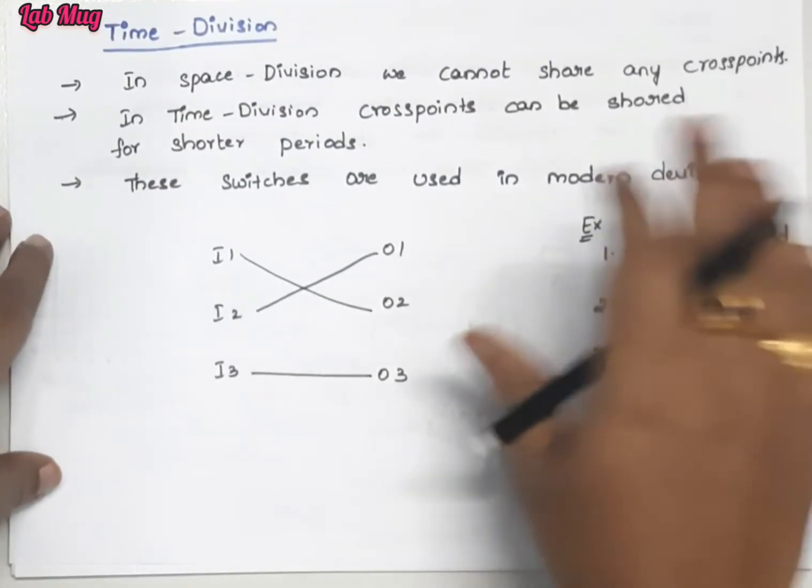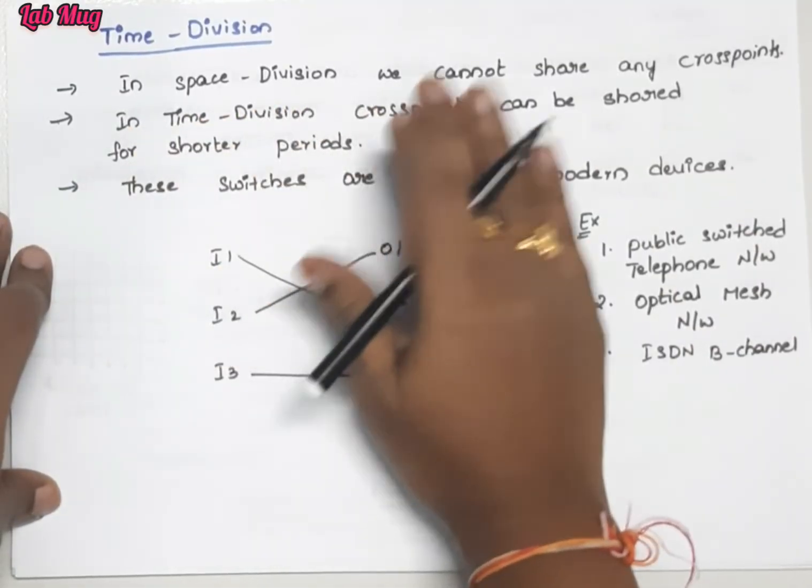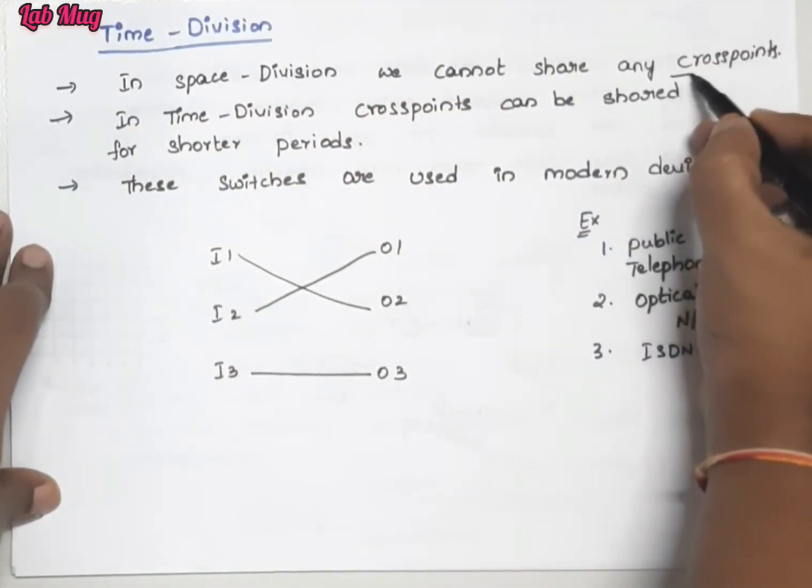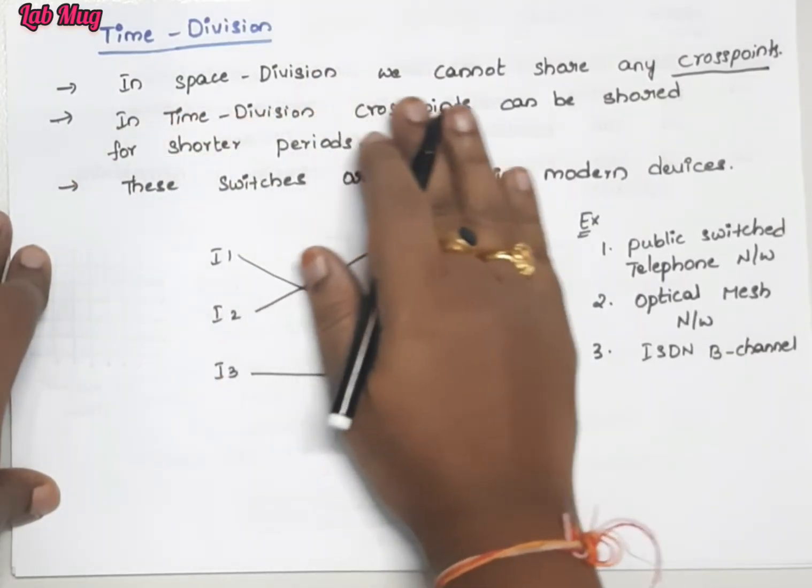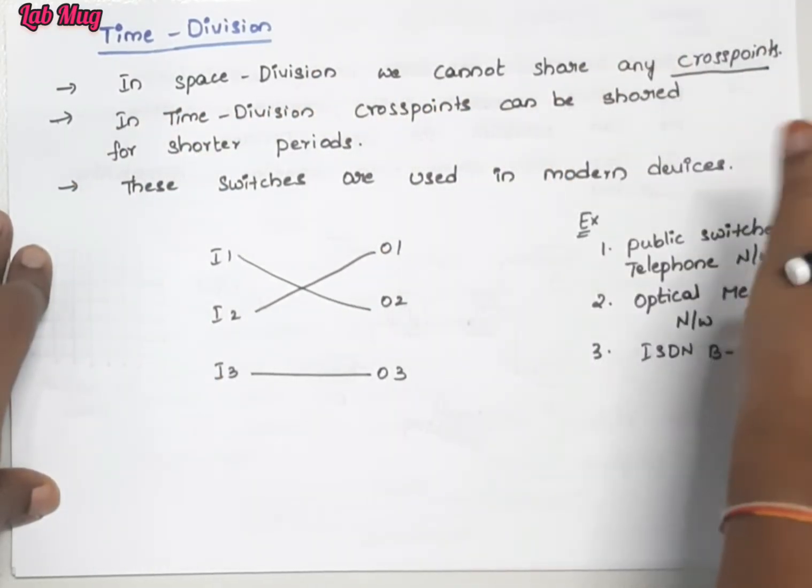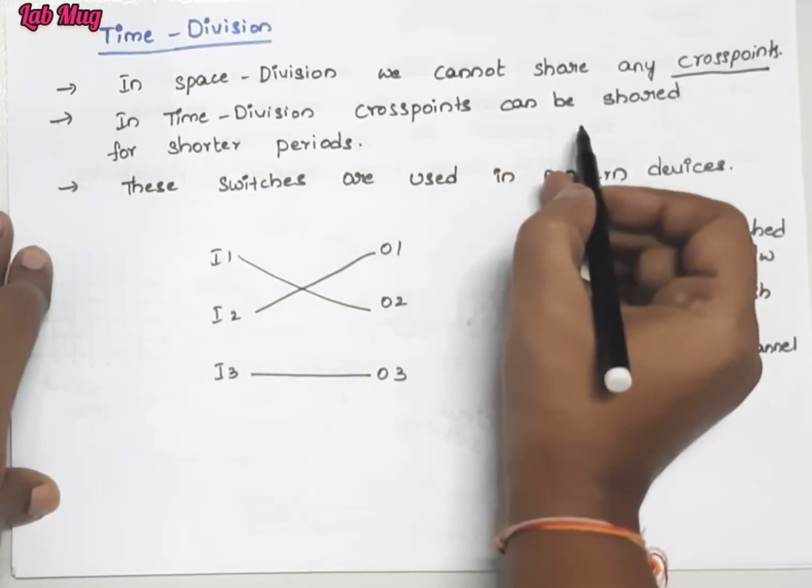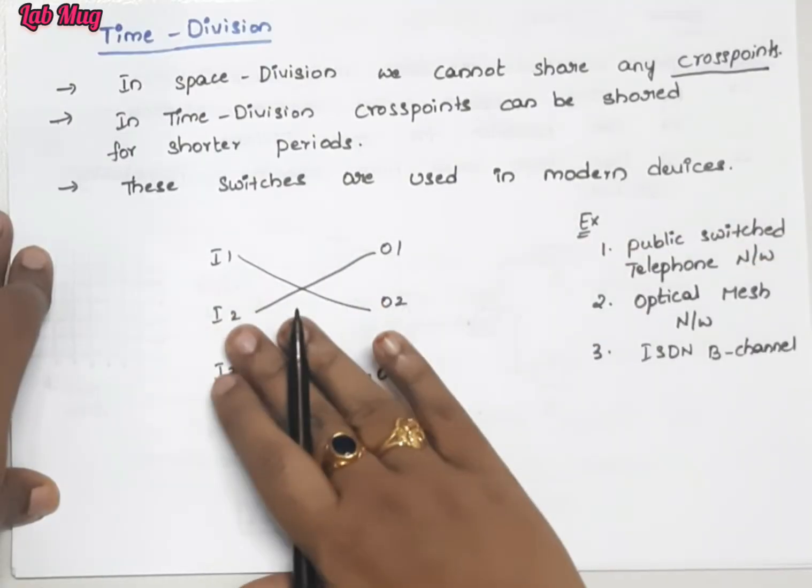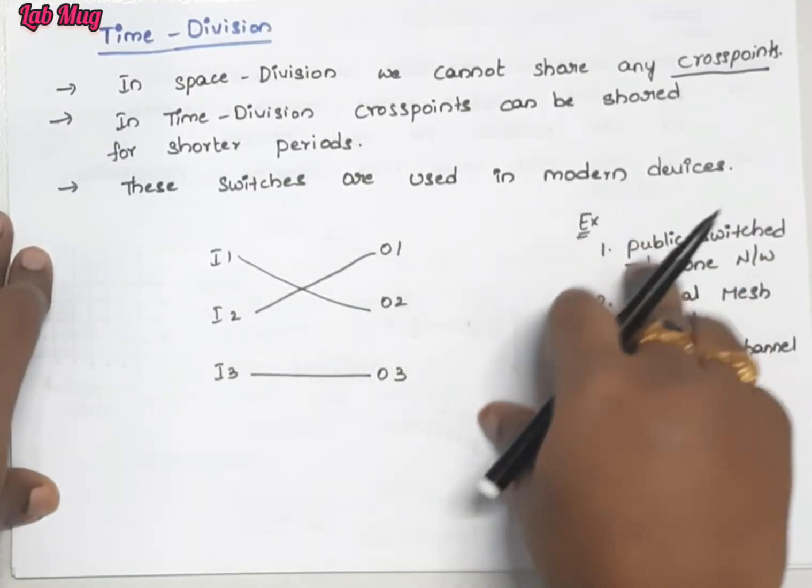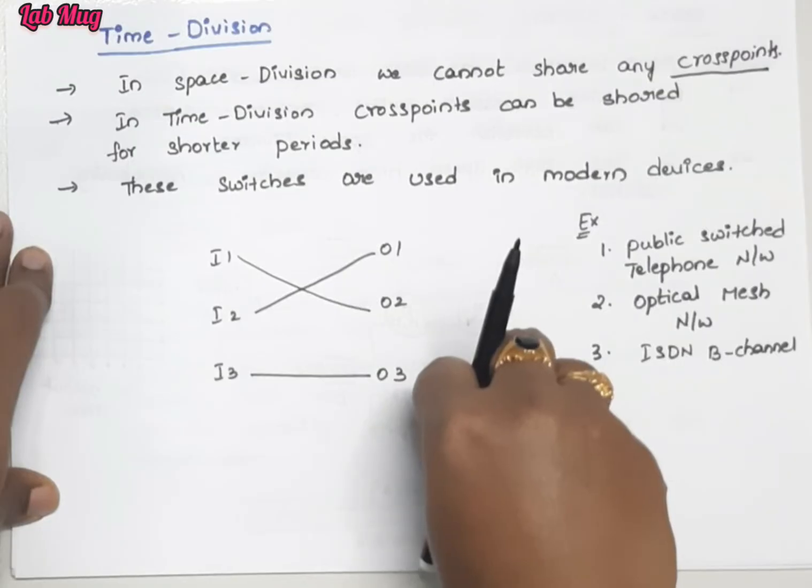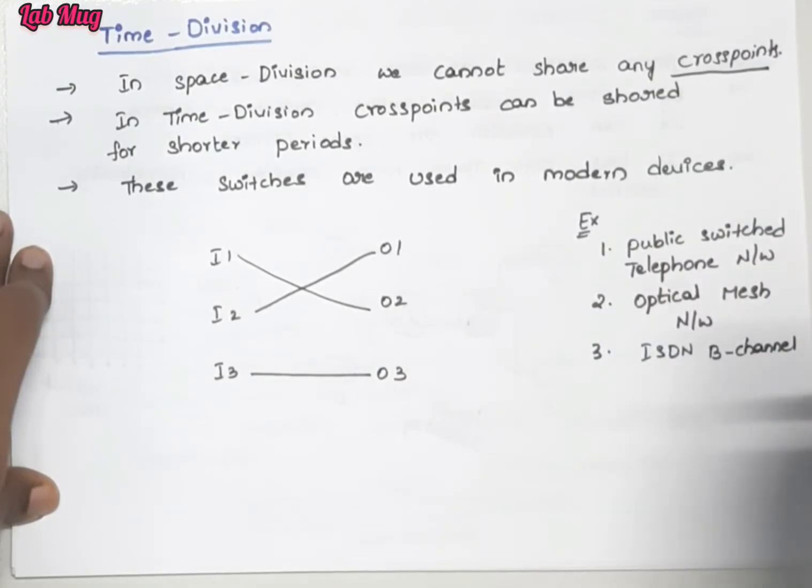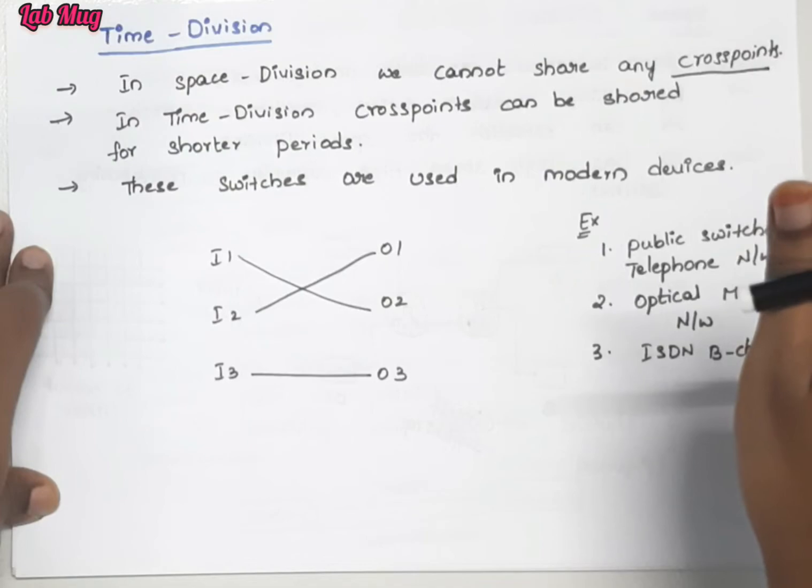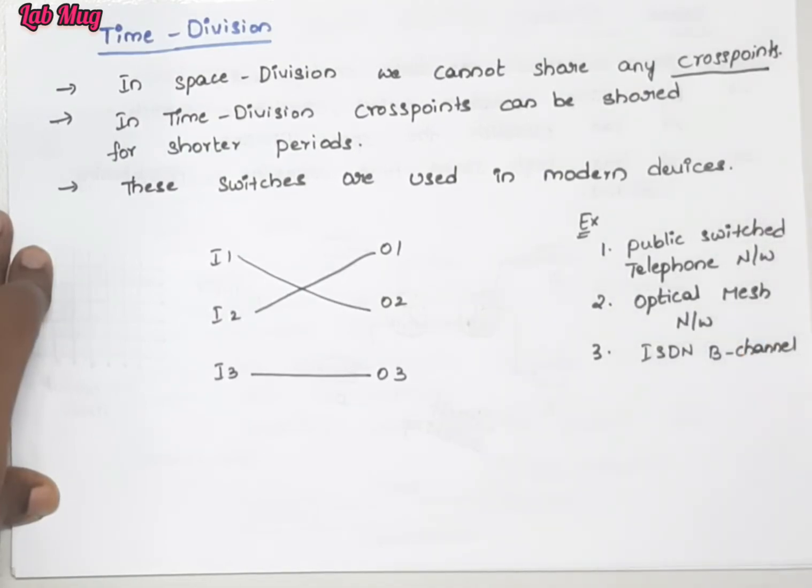There's some variation between time division and space division. In time division, in space division we cannot share any cross points. But automatically in time division we can share cross points, but only for short periods. The total switches used here - in modern devices we use these. Old type devices use space division best.